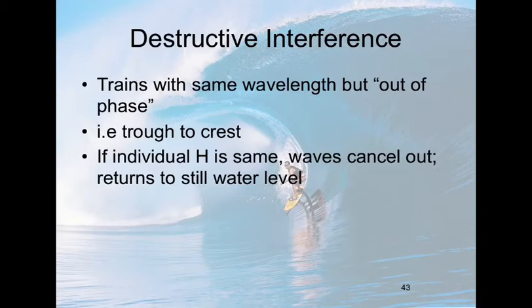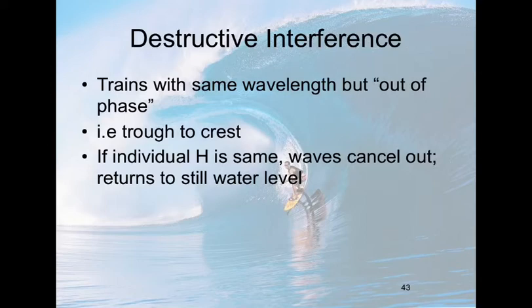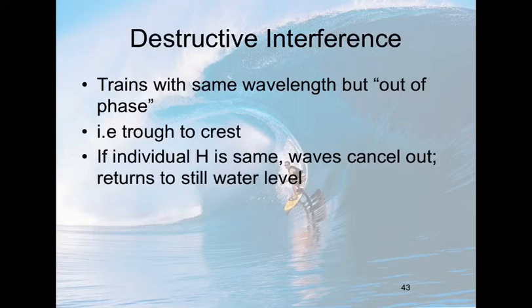Destructive interference is the opposite — constructive adds together, destructive takes away. The wave trains still have to have the same wavelength, but they're out of phase, so instead of coming in crest to crest, they come in crest to trough. If the wave heights are also the same, you can actually come back to still water level — a 2-meter wave and another 2-meter wave coming in crest to trough cancel out. Mr. V actually does a demo with sound waves where he can create two sound waves perfectly out of phase and make quote-unquote silence, which is kind of interesting.